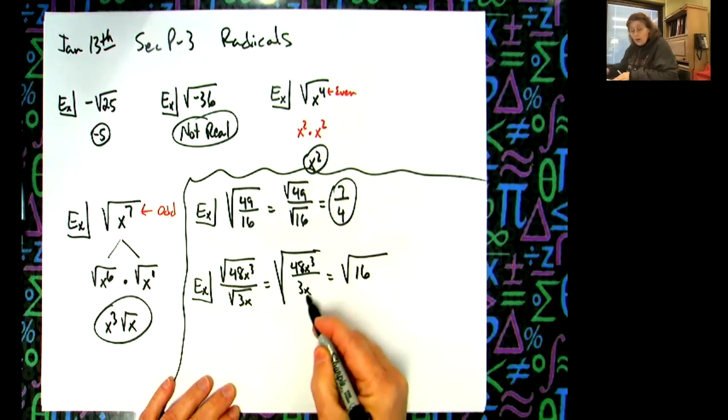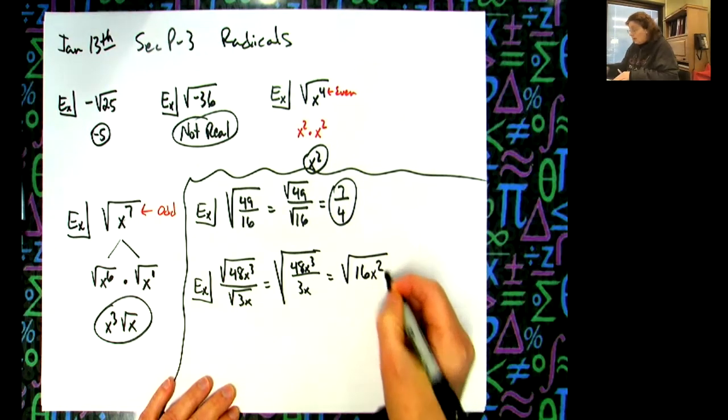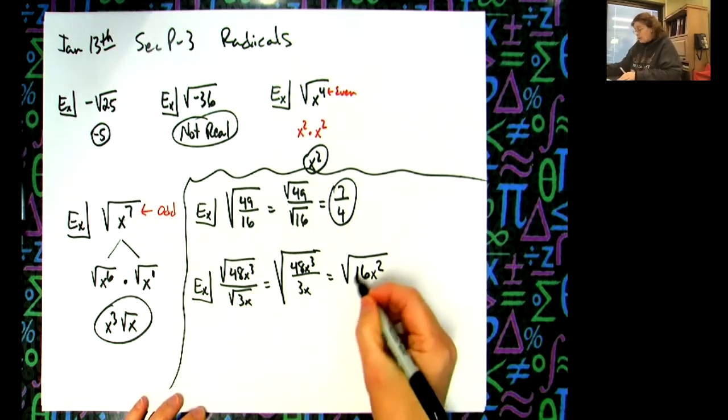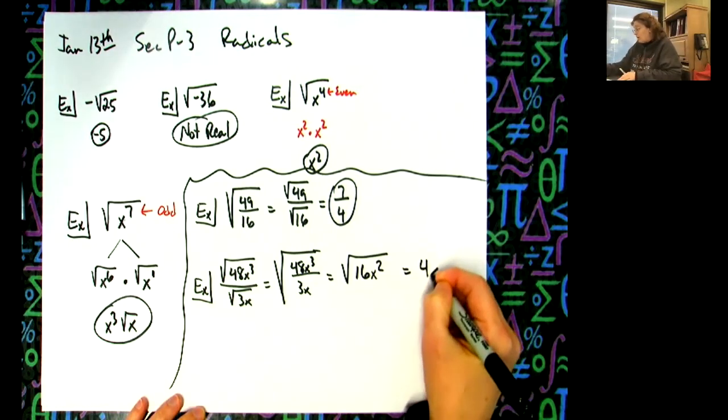So 48 divided by 3 is like a 16. An x to the third over an x, that's going to give me an x squared. Now it's down to something where I can take the square root of that. That's a perfect square. This is as well. So 4x.